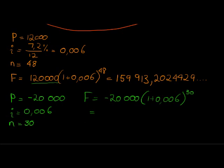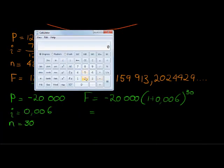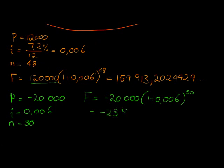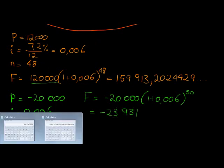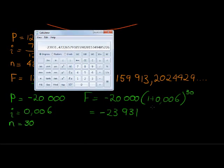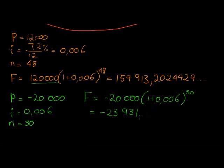That gives us negative 20,000 multiplied by 1.006 to the power of 30, that gives me negative 23,931.47226.